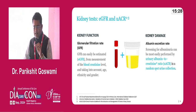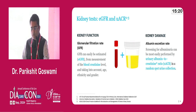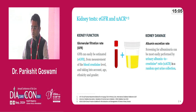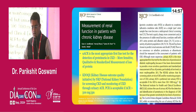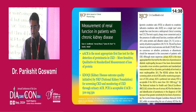What kidney tests can we offer to our type 2 diabetes patients? eGFR — calculated by measurement of serum creatinine, taking into account age, ethnicity, and gender. For kidney damage assessment, albuminuria excretion rate screening can be most easily performed by urinary albumin-to-creatinine ratio in a random spot urine collection. UACR is the most appropriate first-line test for detection of proteinuria in CKD — more sensitive, qualitative, and standardized measurement of protein loss. KDIGO and the National Kidney Foundation recommend screening and monitoring CKD through urinary ACR.